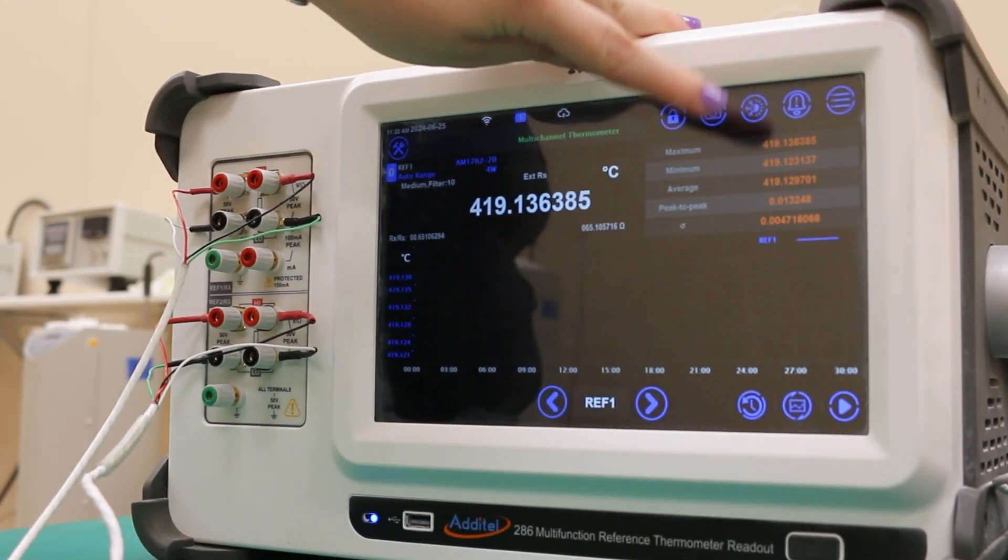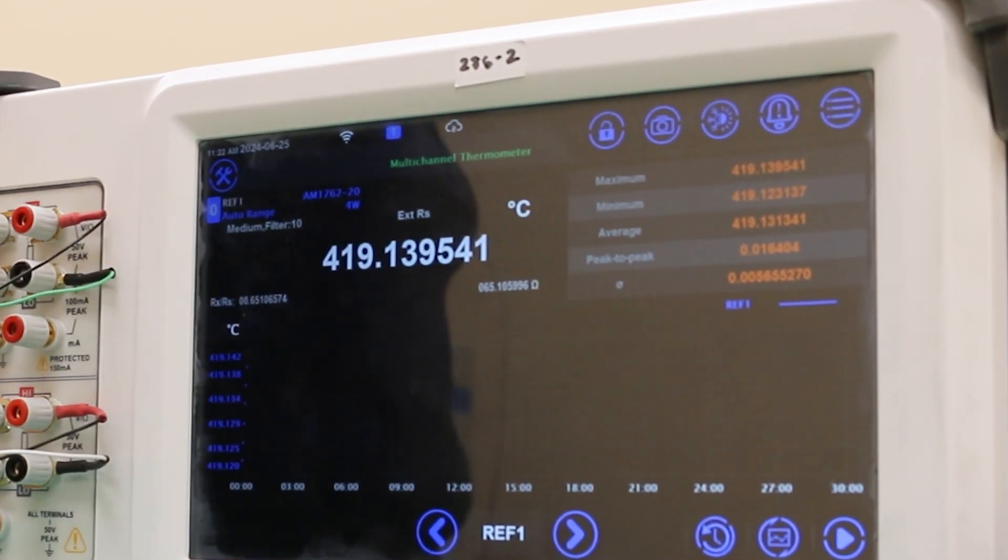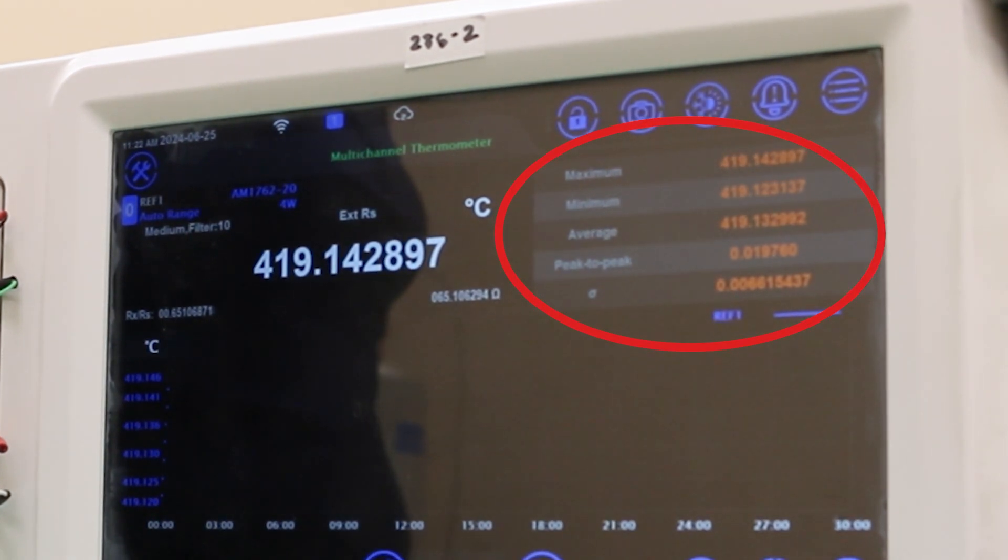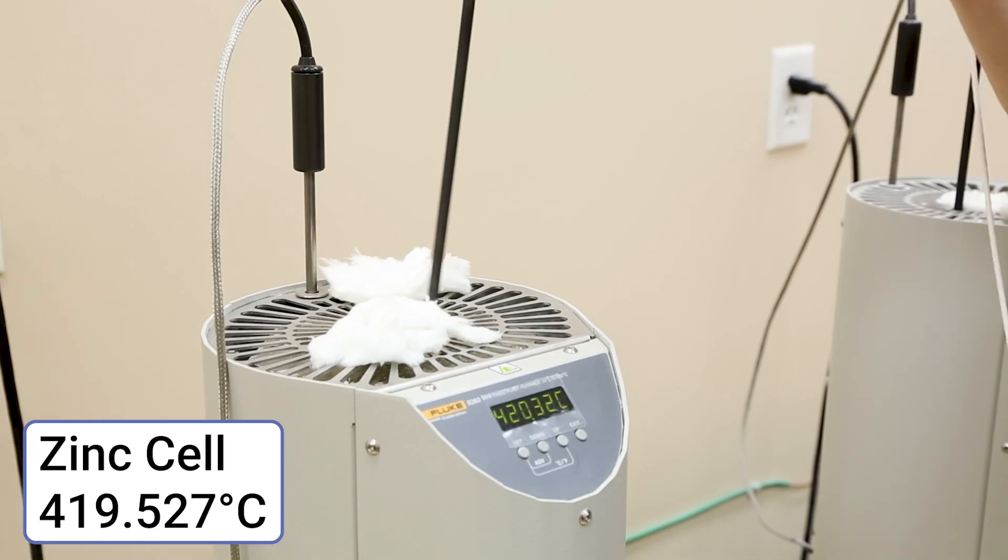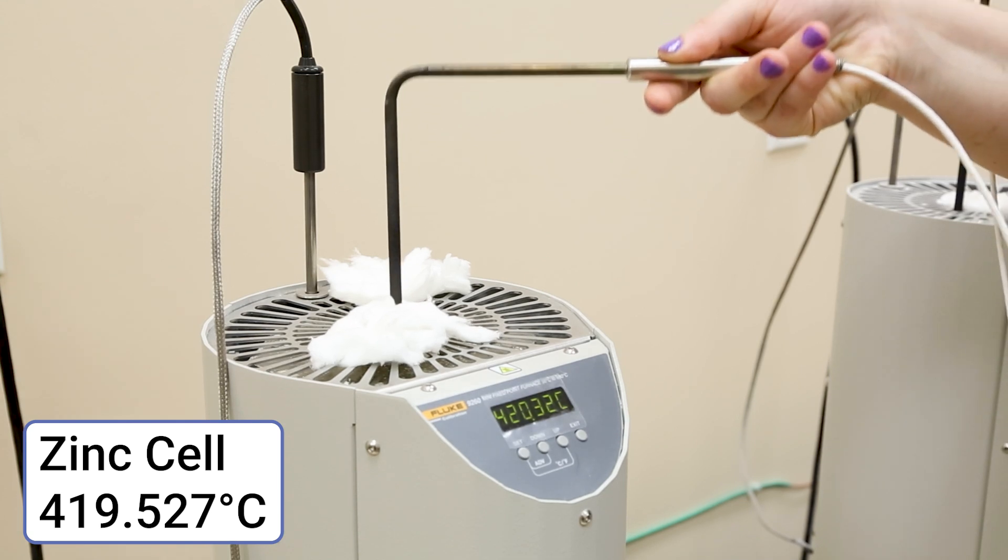With the check standard, we can also see important stability statistics in the top right table, such as average temperature and peak to peak difference of the high and low temperatures. We can now remove the check standard and replace it with the DUT probe that was on standby.